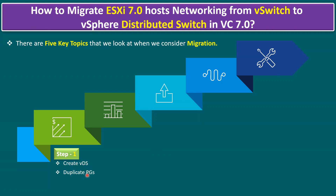Step one also includes duplicating port groups. Within our virtual switch we may have VLANs configured — VLAN 10, VLAN 20, VLAN 30 — three port groups each with a different VLAN. We need to create port groups in the distributed switch with the same VLANs but with different names from the vSwitch port group names.